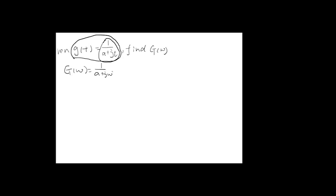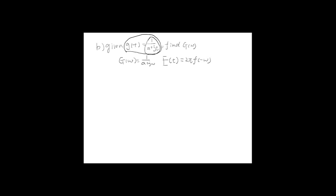Property number 6 in table 7.1 states that if we have capital F(t) and we are asked to find its Fourier transform, it equals 2·pi times f(negative omega). Here, capital F(t) stands for a function that is very similar to the Fourier transform of g(t) from part a — that g(t) being e to the negative a·t times u(t), whose Fourier transform was 1 over (a plus j·omega).